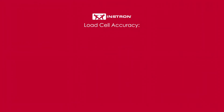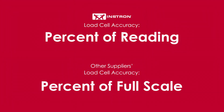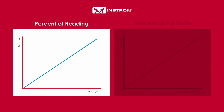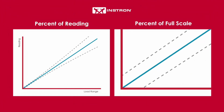Before I go through an example, I want to highlight a few things you should be mindful of. The accuracy of Instron load cells is based on a percent of reading, while the accuracy of some suppliers' load cells is based on a percent of full scale. The important distinction here is that when measuring accuracy as a percent of reading, the error scales with the force reading. Whereas with accuracy as a percent of full scale, the error is constant and becomes much more pronounced with lower readings.